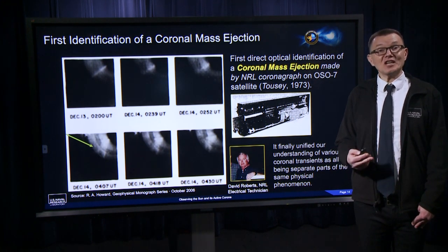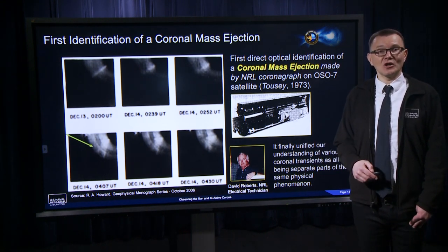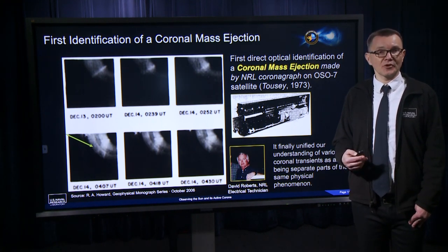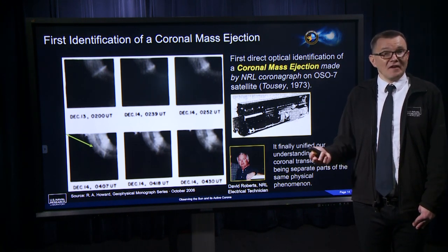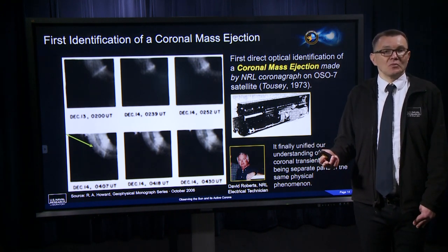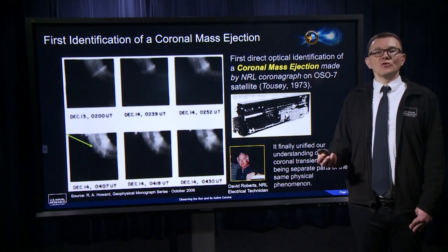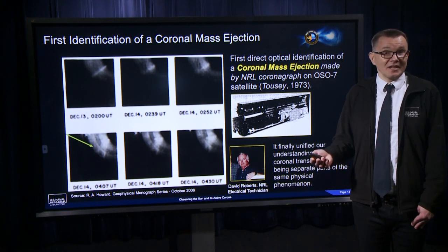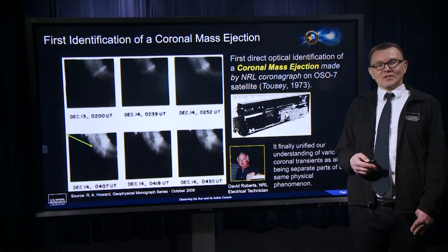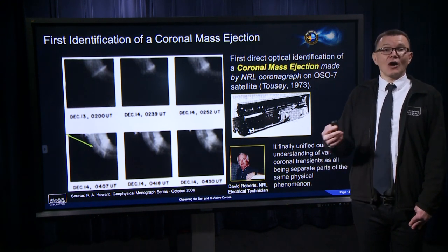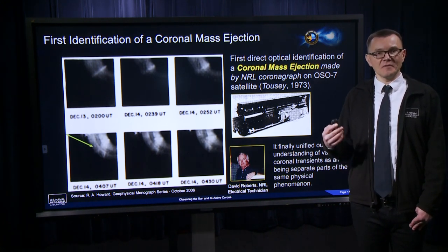For the first identified CME, the legend at NRL says that Dave Roberts, an electronics technician responsible for testing the coronagraph camera, was in charge of day-to-day operations. He thought his camera had failed because certain areas of the image were much brighter than normal. But on the next images, the bright area had moved away from the sun, so he immediately recognized it as unusual and took it to his supervisors, Dr. Bruckner and Dr. Toussaint. This observation finally unified our understanding of various coronal transients as all being separate parts of the same physical phenomenon.